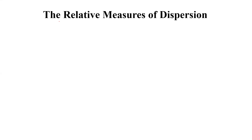Hello. Here we will talk about the relative measures of dispersion. As we know, measures of dispersion are of two types: the first one is the absolute measures of dispersion, and the second one is the relative measures of dispersion. So here we need to understand what the relative measures of dispersion are.